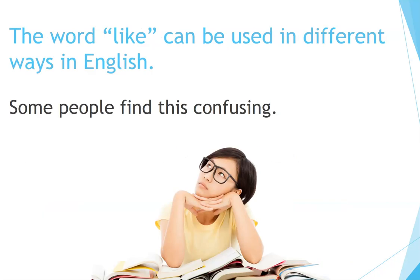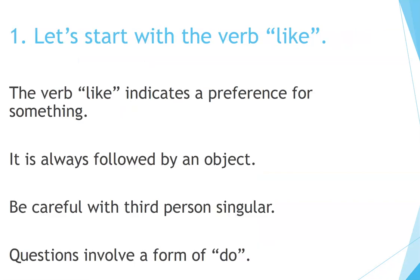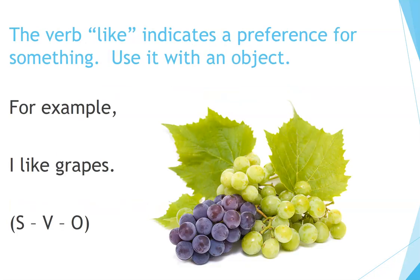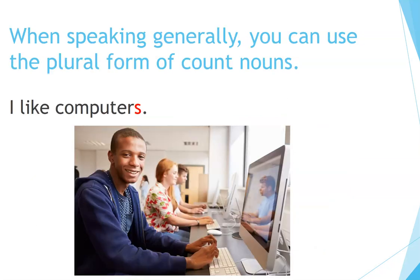The word like can be used in different ways in English, and some people find this confusing. Let's start with the verb like. The verb like indicates a preference for something. It is always followed by an object. Be careful with third person singular, and questions involve a form of do. Use it with an object — for example: I like grapes. Subject, verb, object. When speaking generally, you can use the plural form of count nouns: I like computers.